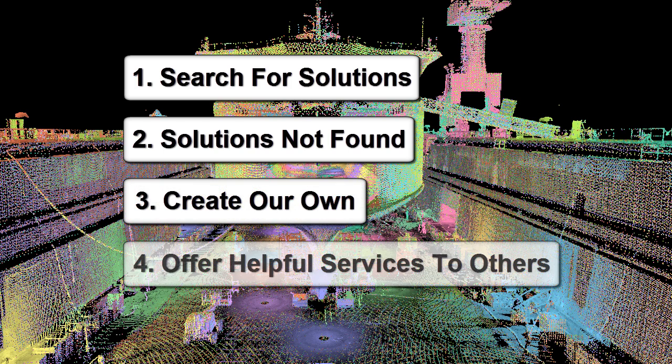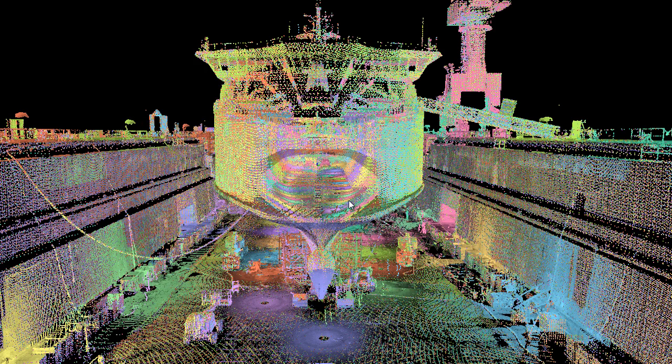Imagine, if you will, trying to work with the hull when you have other objects there in the laser scan data — things that could interfere, such as the blocks that support the hull, ladders, equipment, even the dry dock itself — items that could easily get in the way of what you're trying to do.